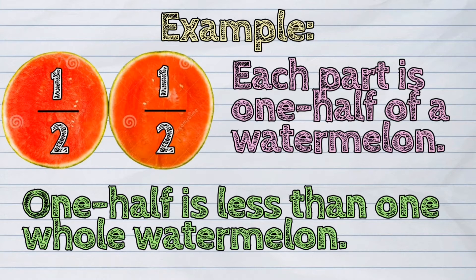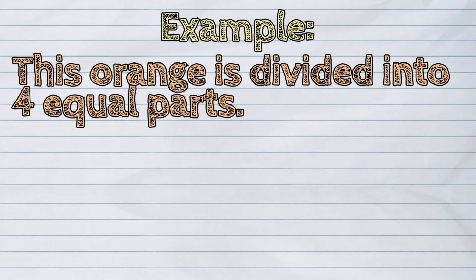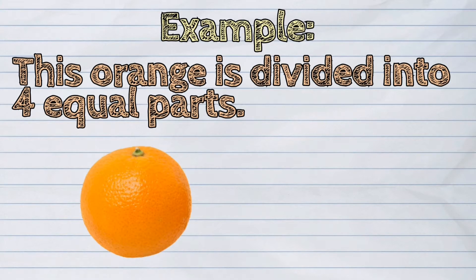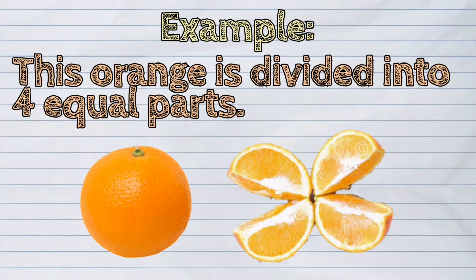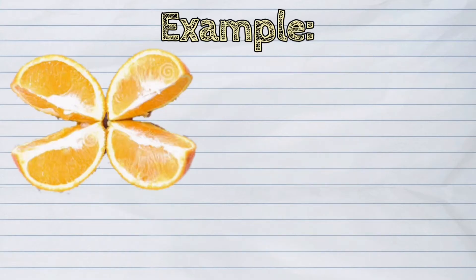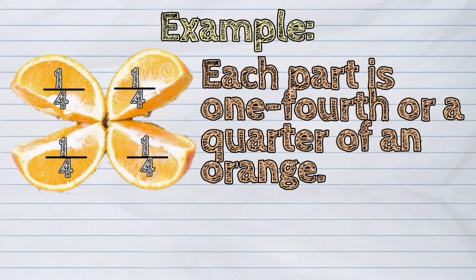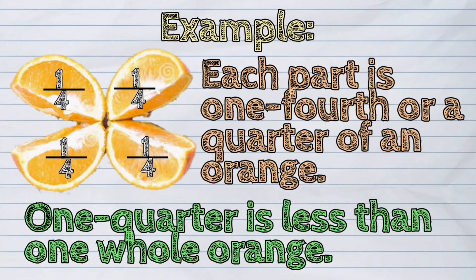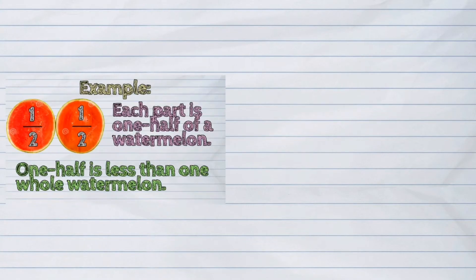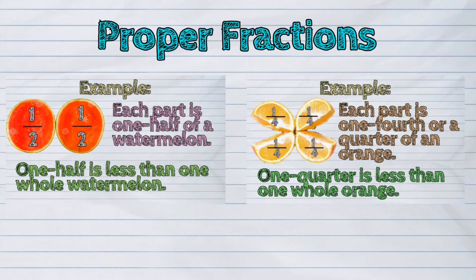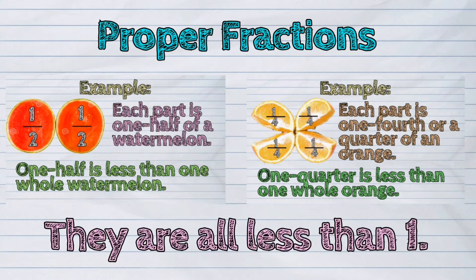Another example: this orange is divided into four equal parts. Each part is one fourth, or a quarter, of an orange. One quarter is less than one whole orange. One half and one fourth are proper fractions — they are all less than one.